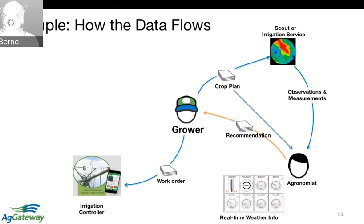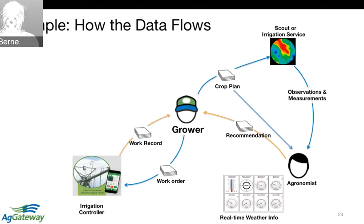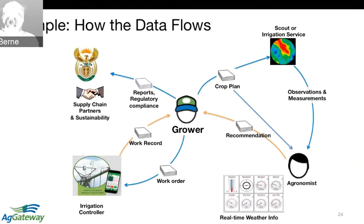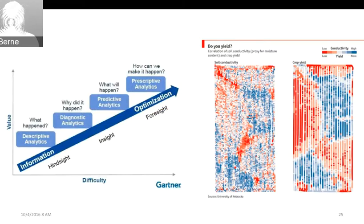Using irrigation as an example, you might send a work order — which can be automatically sent to an irrigation controller based on the data — as a command or recommendation. For drip irrigation it might start automatically, but for very large pivots you would not use this to automatically turn them on because they're so big. The data can be captured as a record and then used to provide reports as needed to your supply chain partners, your co-op, or to the government.